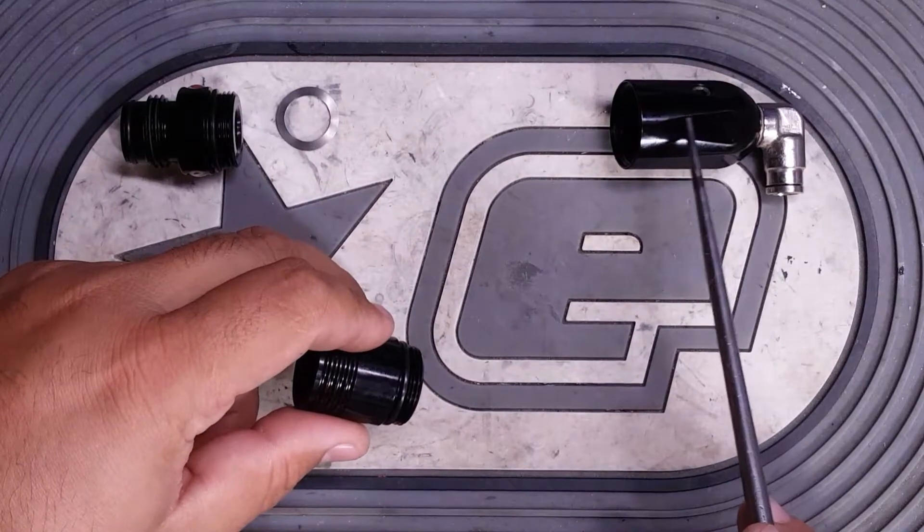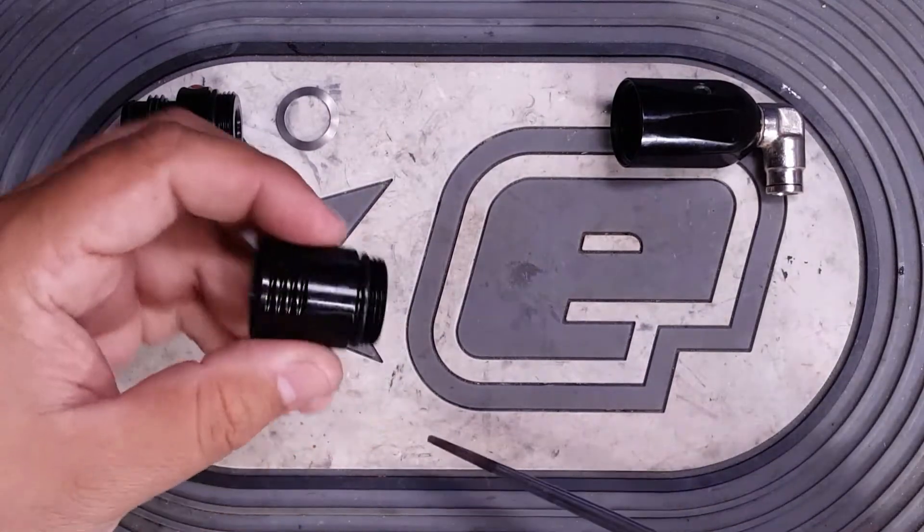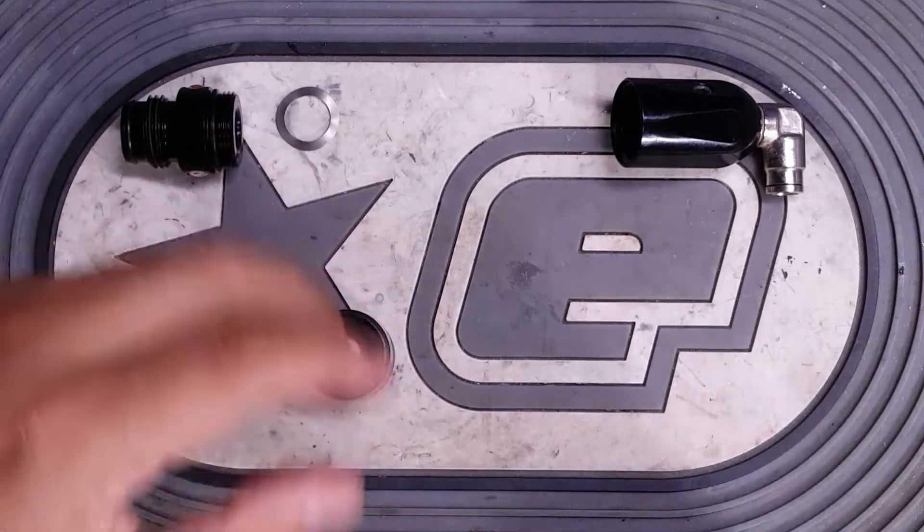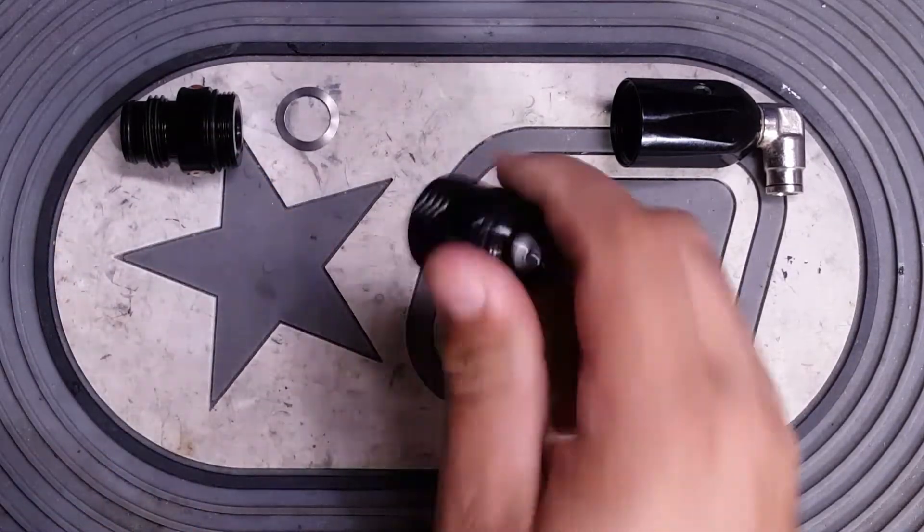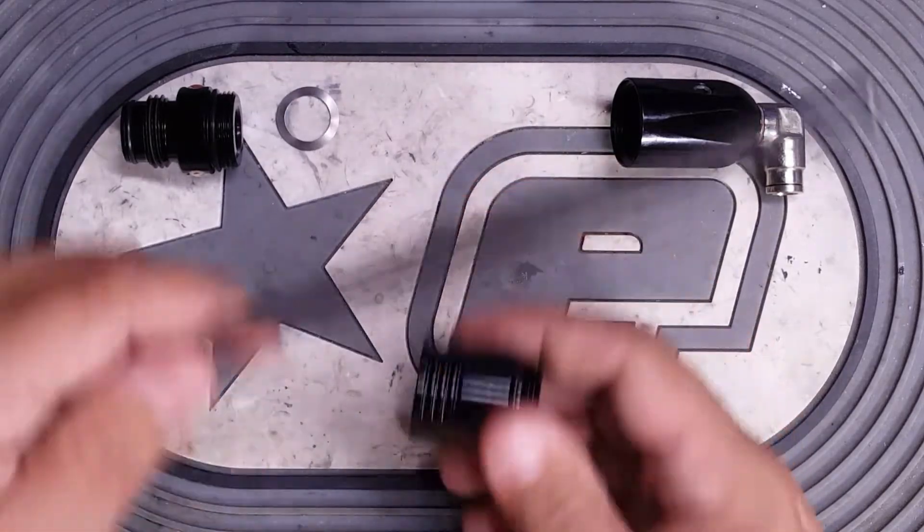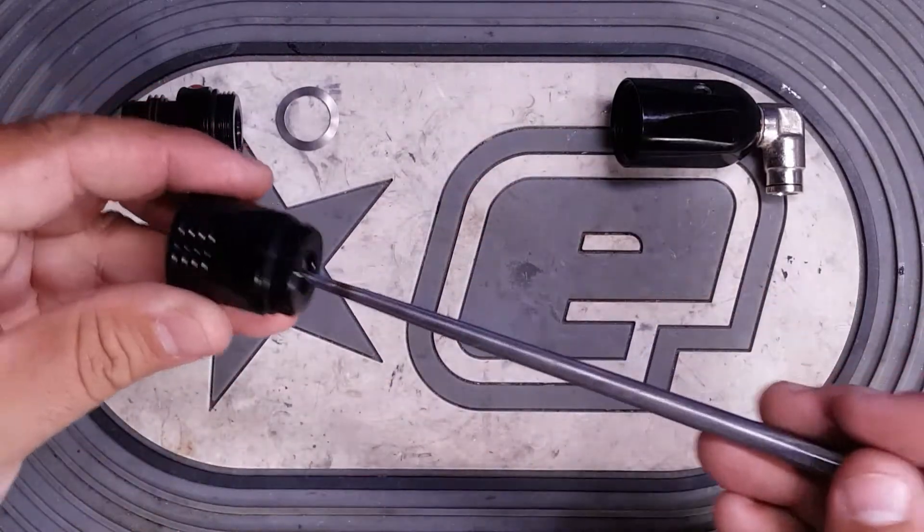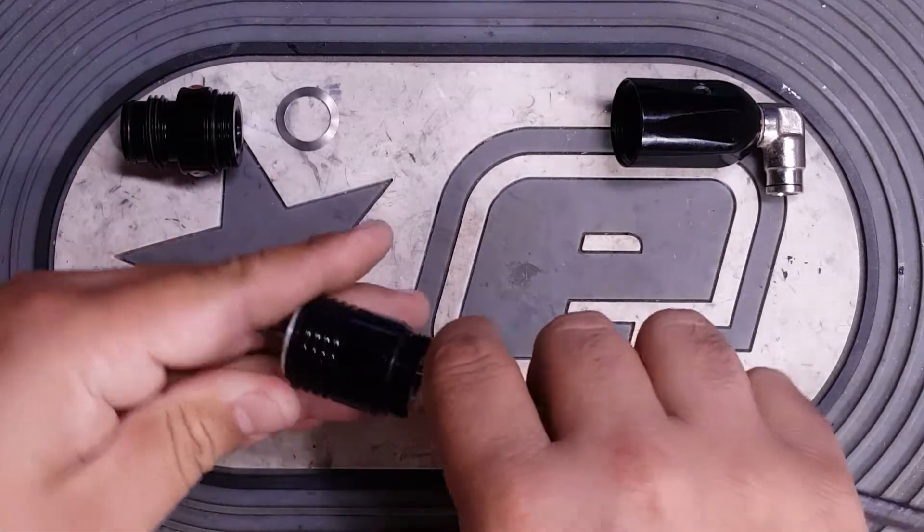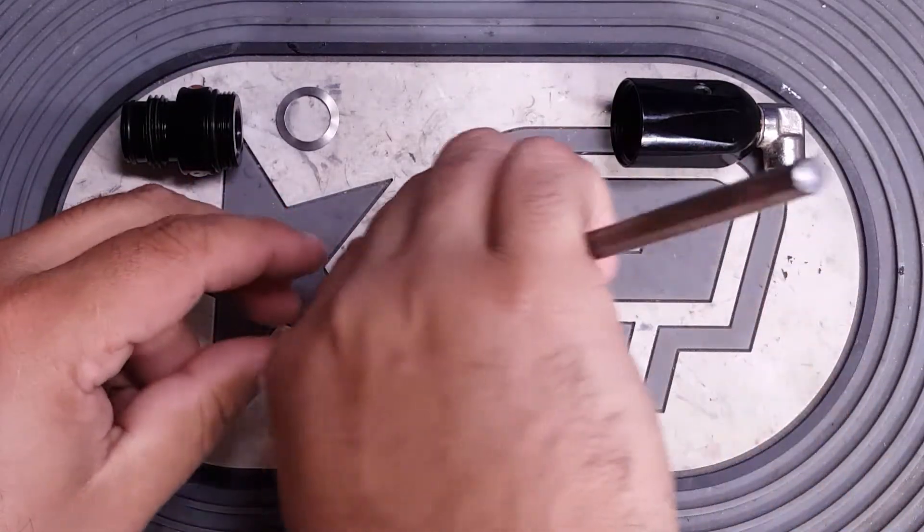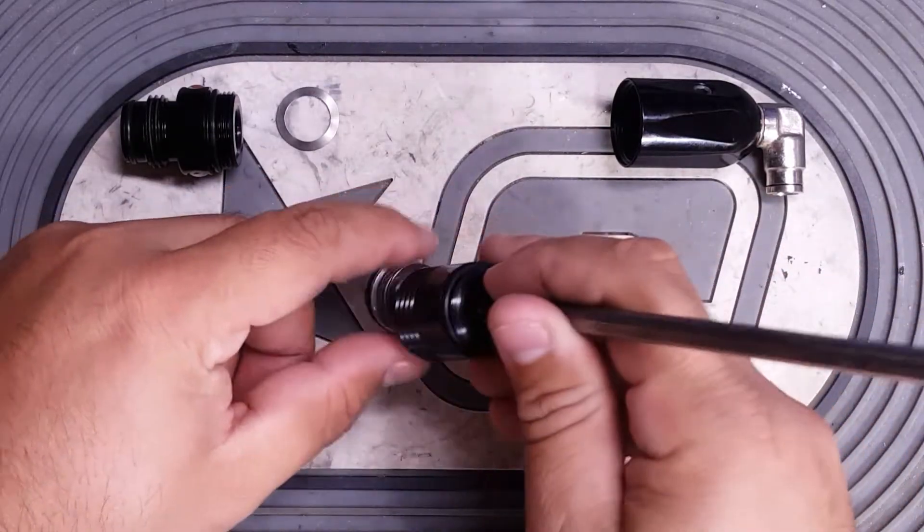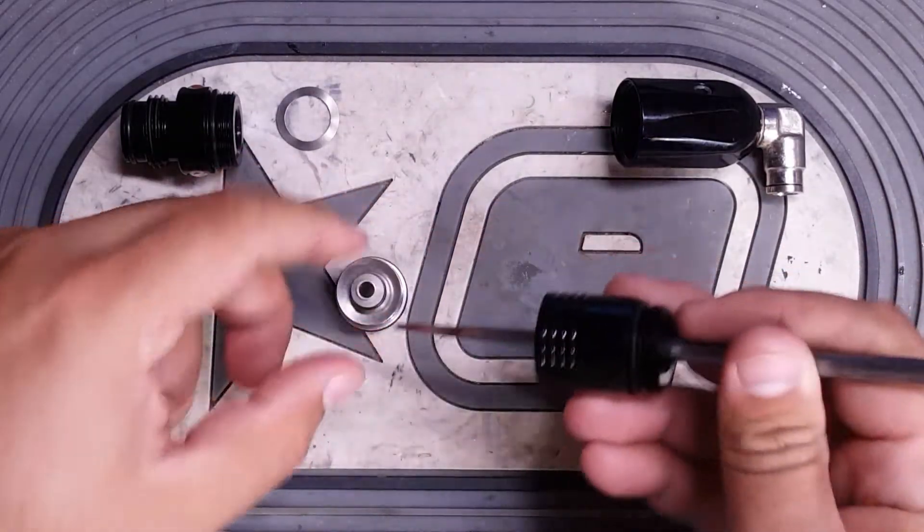And then also the seals in the lower section here. To get this piston out, you can try and whack it on the workbench. Sometimes it will come out real easy. Otherwise, use an Allen key or a punch or something like that and just push it out from the bottom. Make sure when you push it out though, be careful because this does have double springs on it. Little curved spring washers.